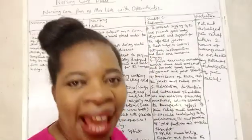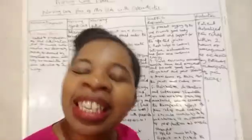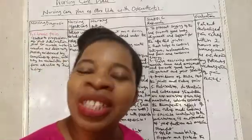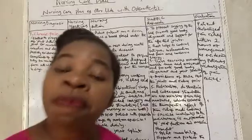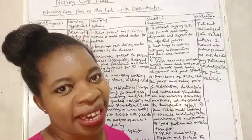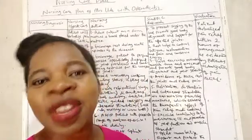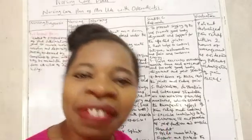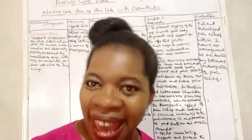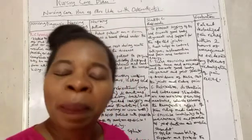Nursing action number eight: give prescribed analgesics such as aspirin. Scientific rationale: aspirin inhibits the synthesis of prostaglandins in the central nervous system, thus relieving pain.